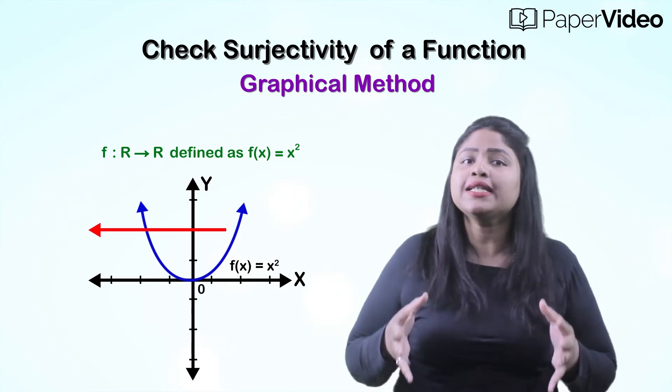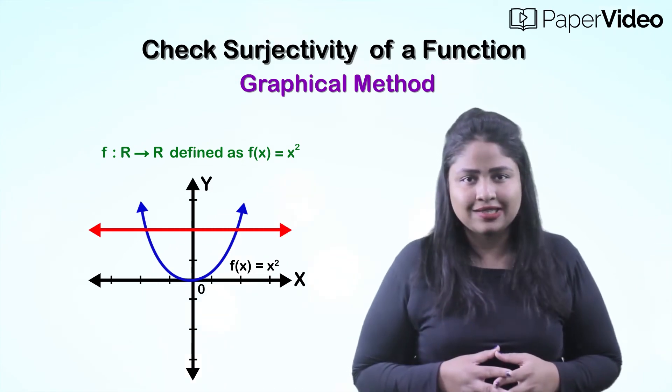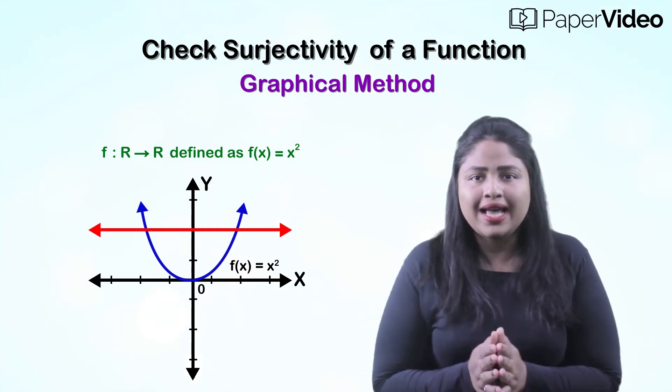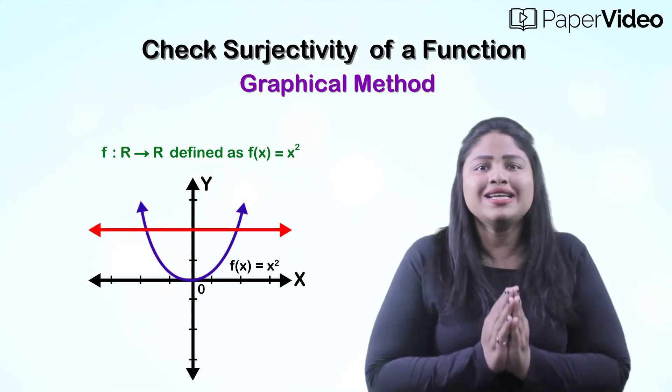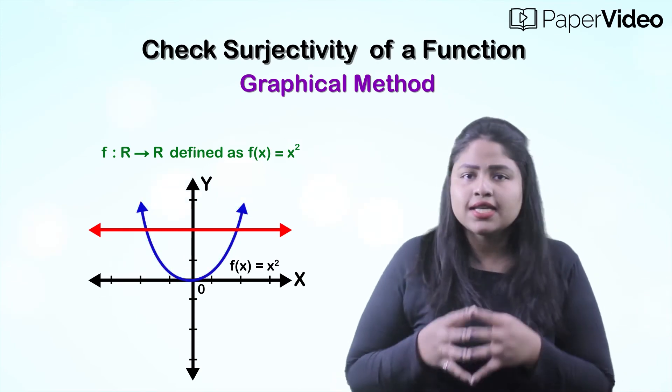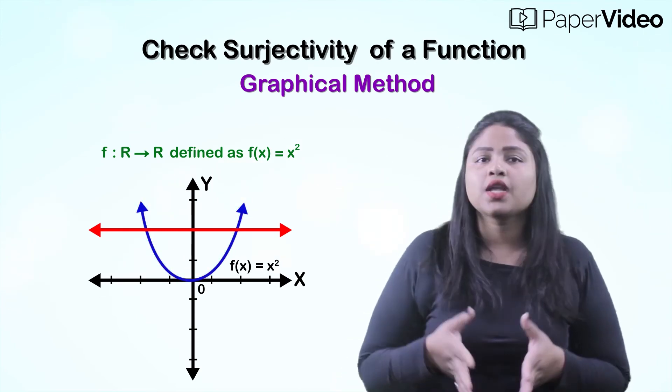Next step is to draw a horizontal line parallel to the x-axis. If this horizontal line intersects the curve in at least one point, then the given function is a surjection. Otherwise, it is not a surjective function.